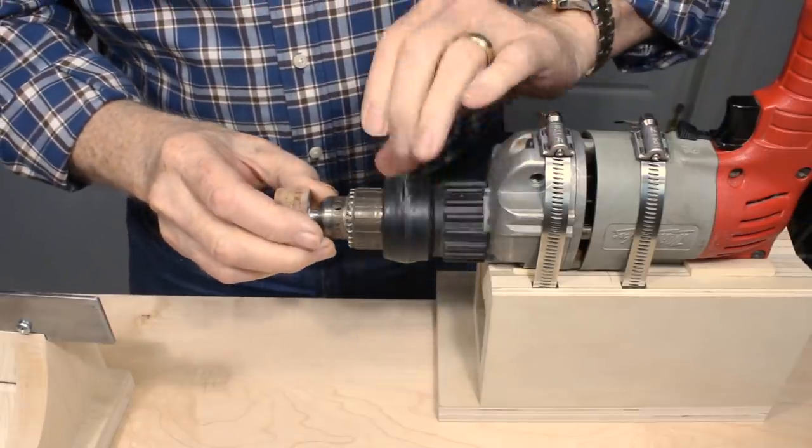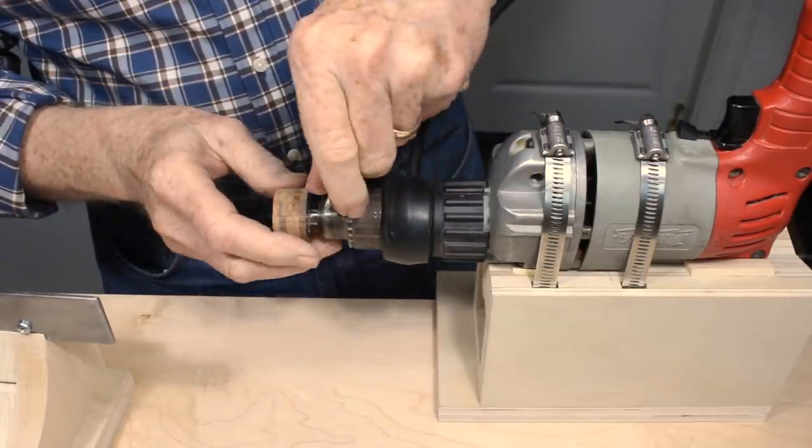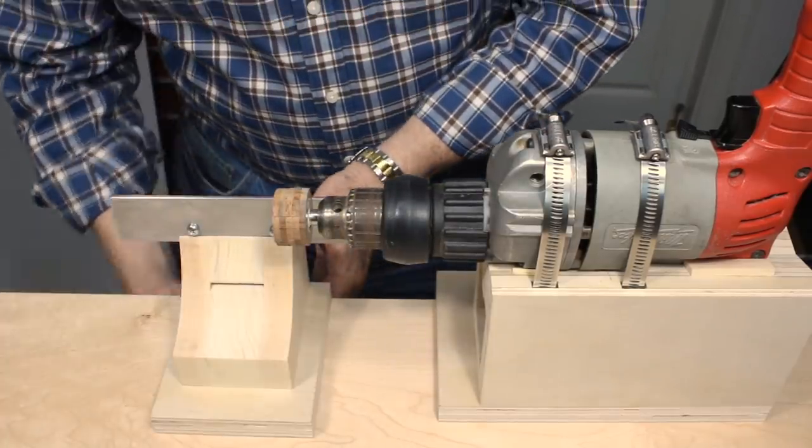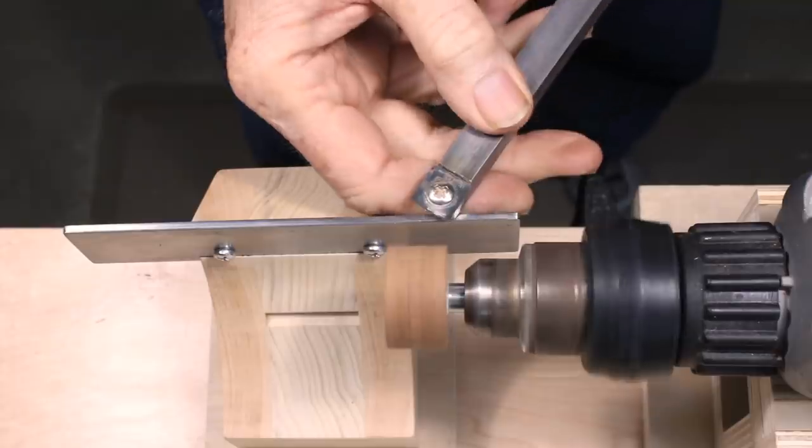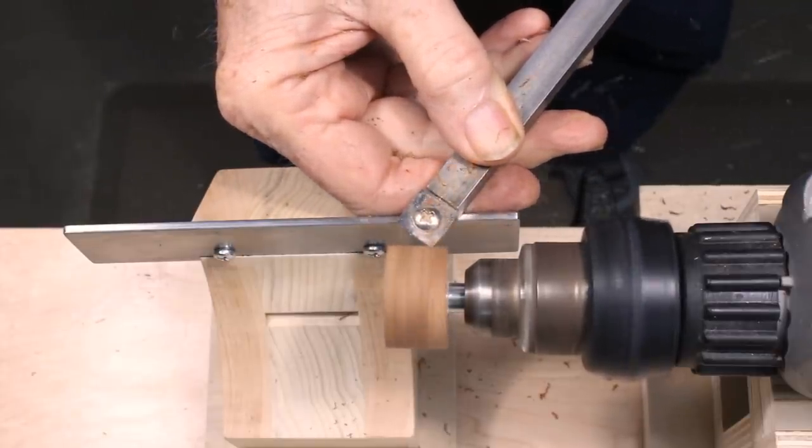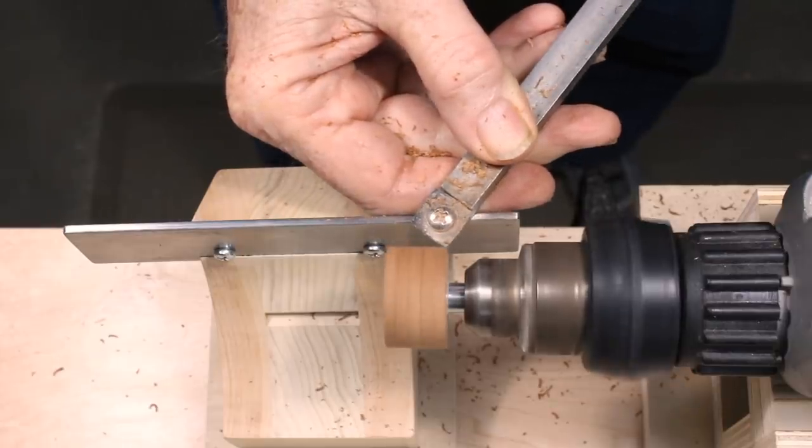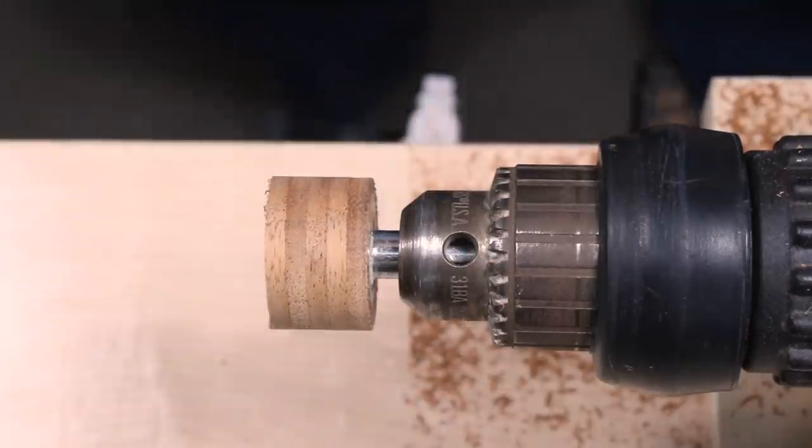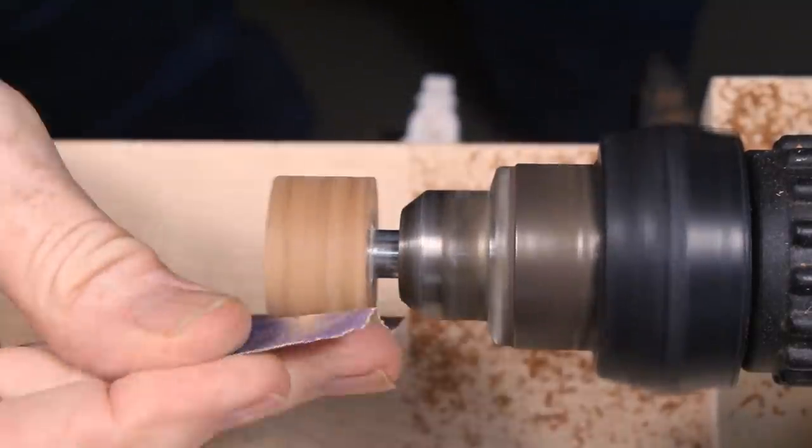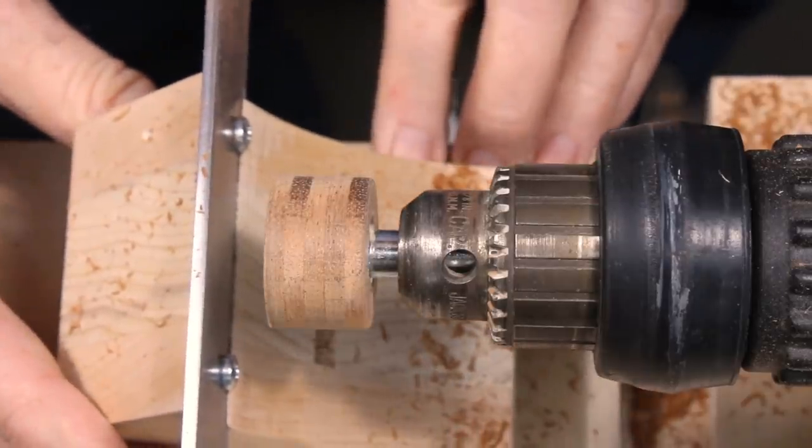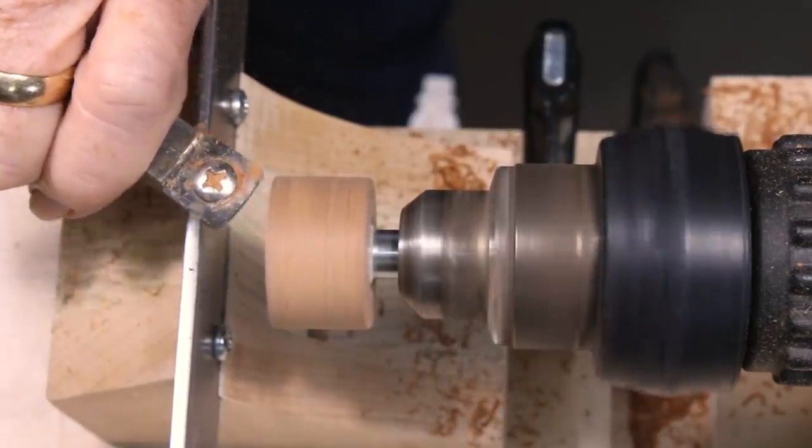There are lots of ways to make a drive spur and I've tried many of them. I now think that making them out of hardwood plywood is probably the easiest method. First, chuck the spur blank into the drill, set up the tool rest, and then turn the wooden end round. Sand it smooth. Rotate the rest and turn the face flat. This ensures that it is square to the shaft.